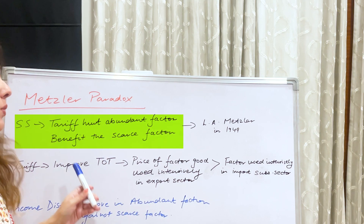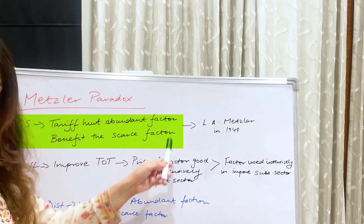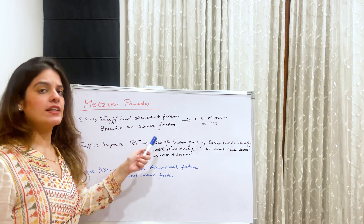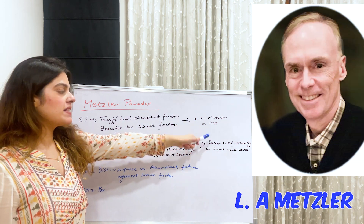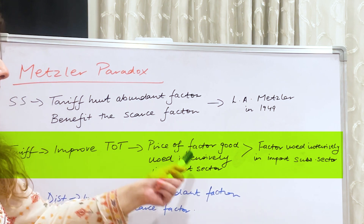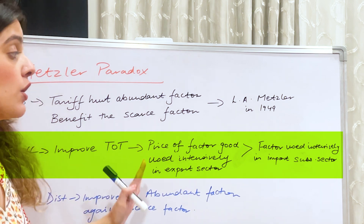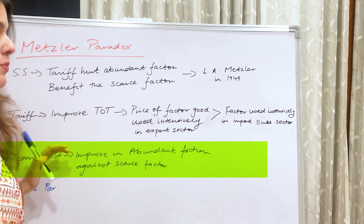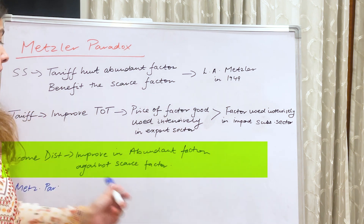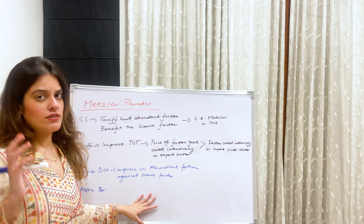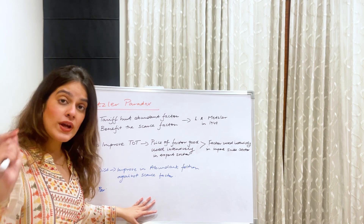In the Stolper-Samuelson theorem, it was said that when a tariff is imposed, it hurts the abundant factor and benefits the scarce factor. But in 1949, L.A. Metzler opposed this theorem. He said that tariff tends to improve the terms of trade, and in fact the price of the factor used intensively in the export sector rose compared to the price of the factor used intensively in the import substitution sector. He argued that when income distribution changes, there is an improvement in the abundant factor against the scarce factor — and this is what he called the Metzler Paradox.